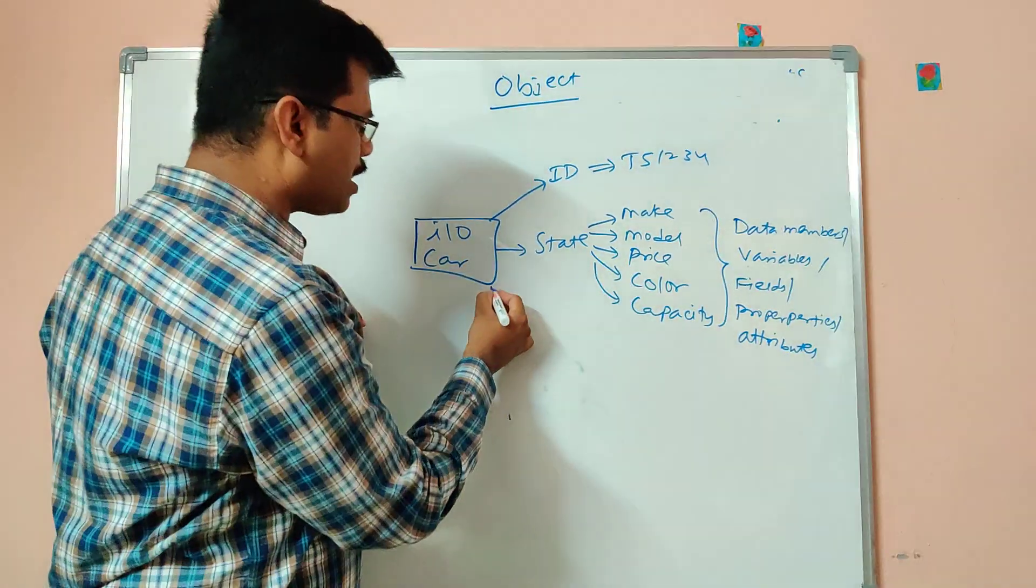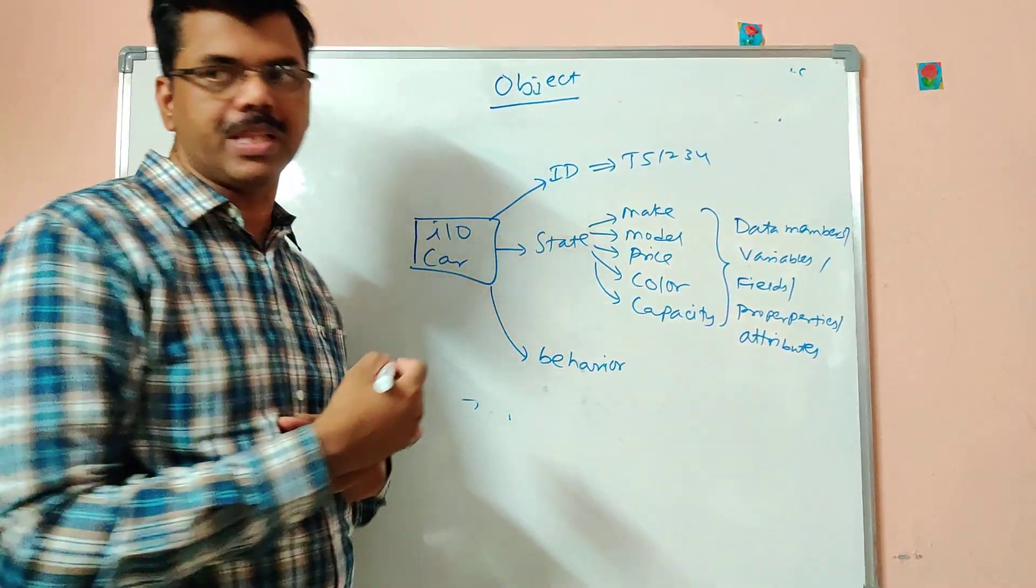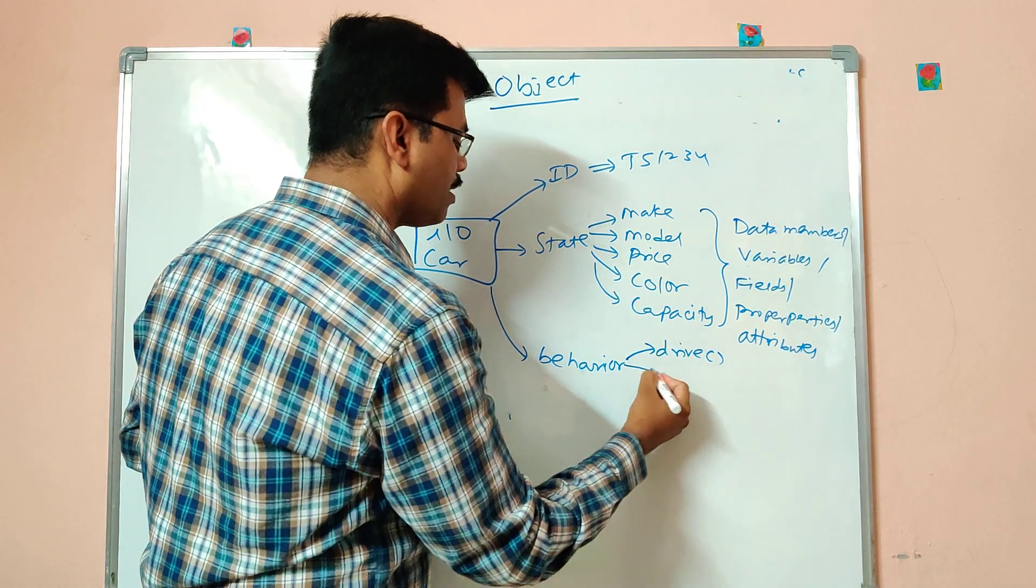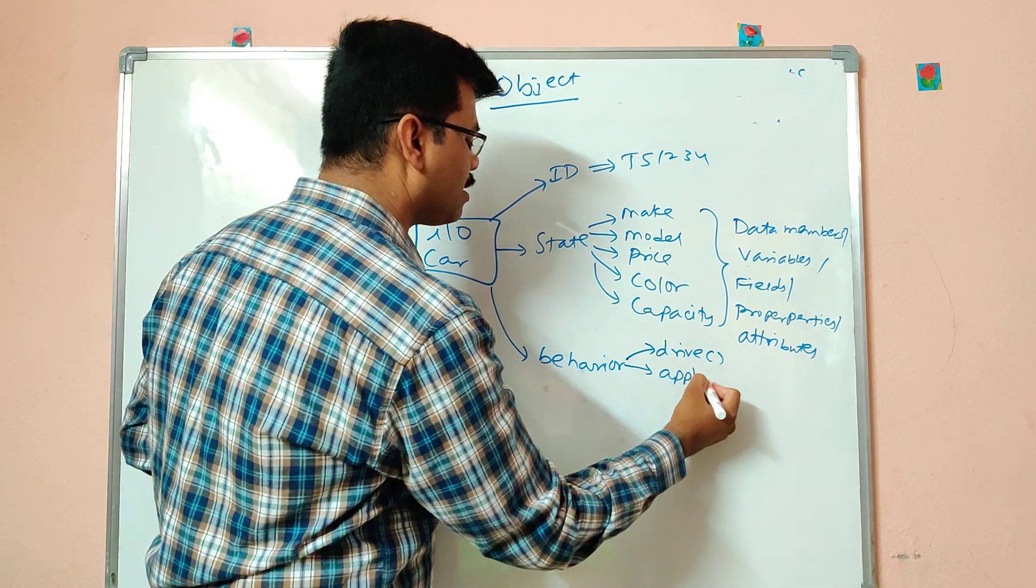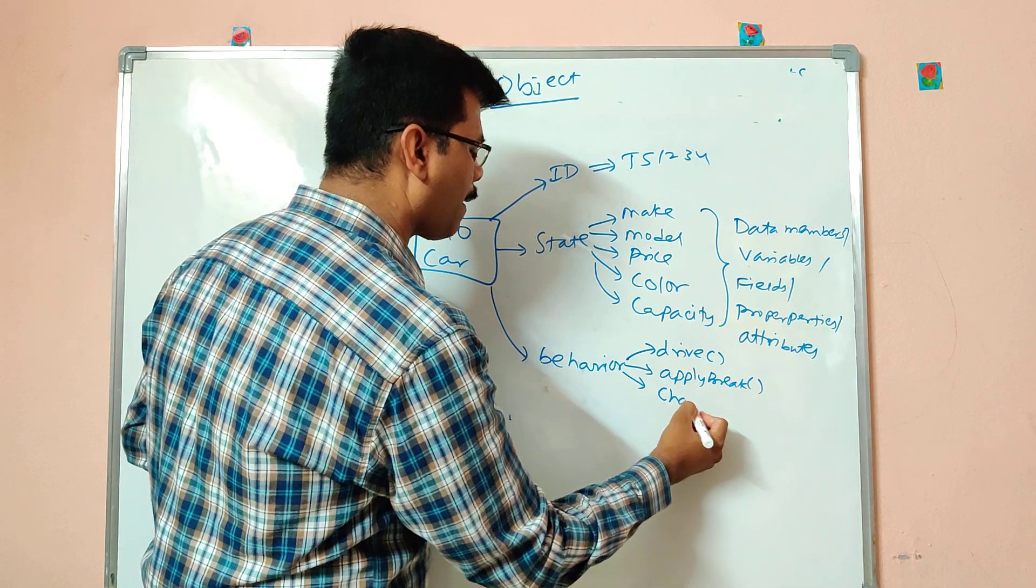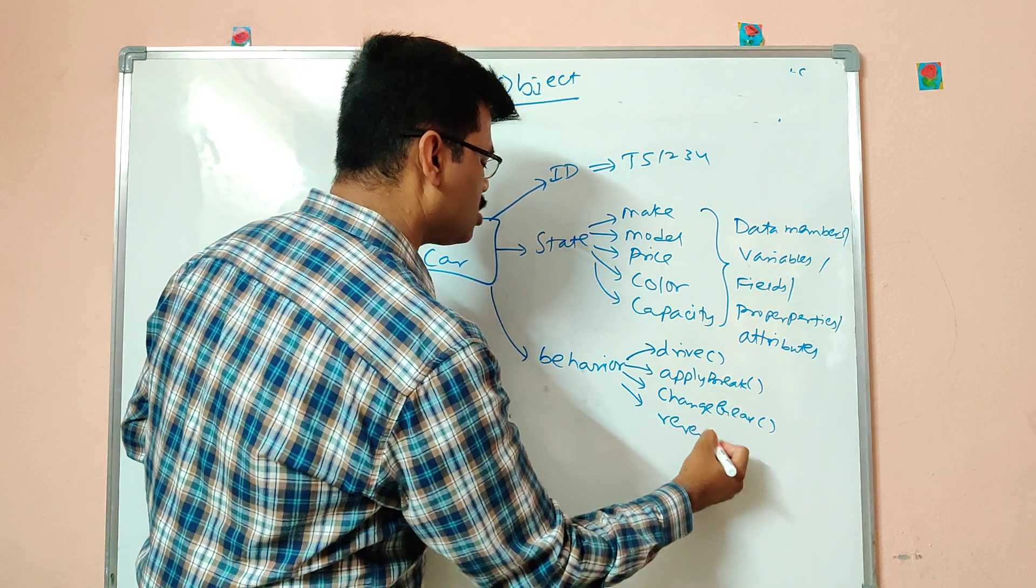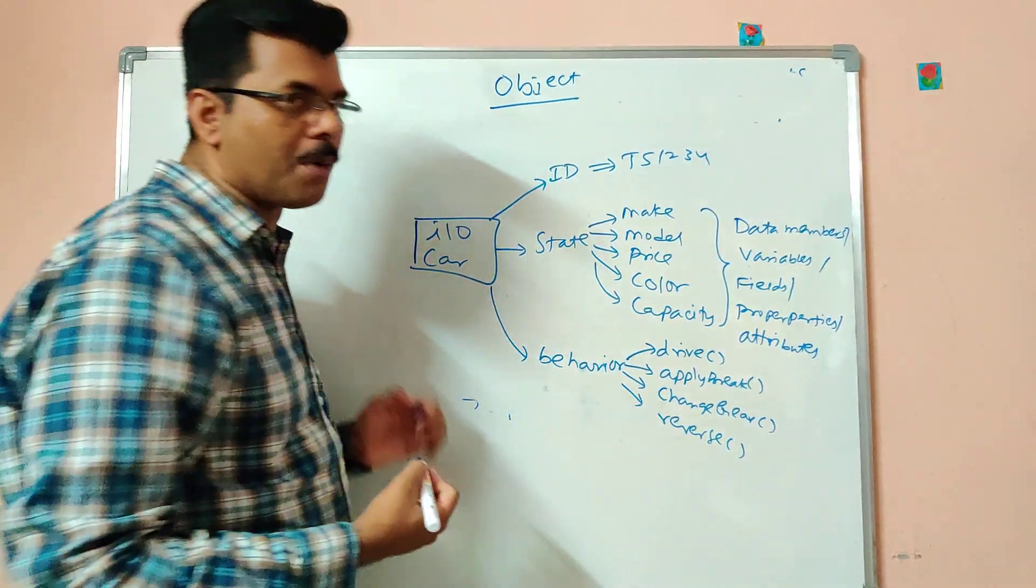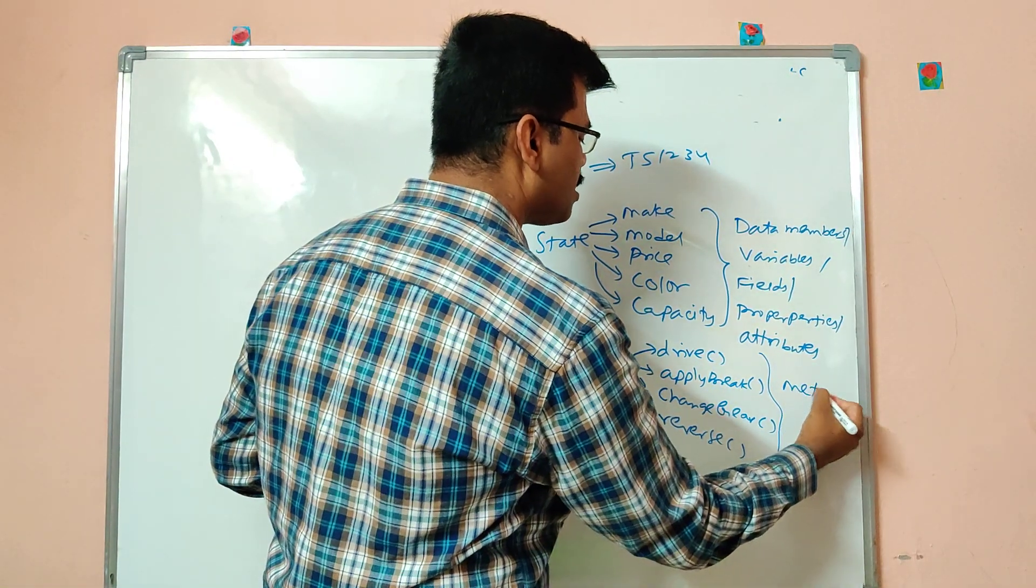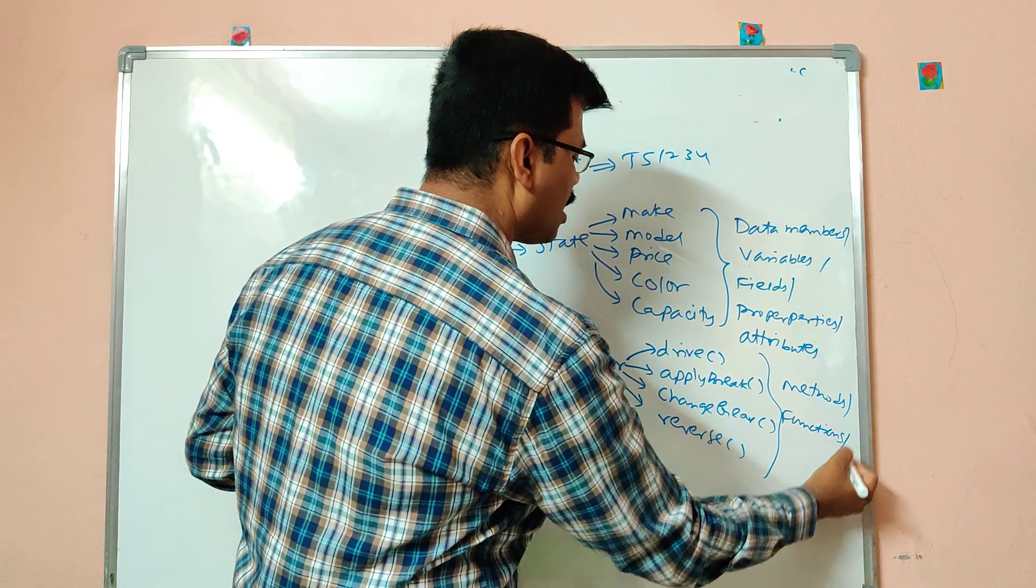And for an object we can go with the behavior. The meaning of behavior is like the operations what we perform with the car. By using this car what we can do? We can drive the car. We can apply brake. We can change gear. We can reverse. So what are the functionalities we are doing with the object? That is called as the behavior. And this behavior we can even call it as methods or functions or operations.